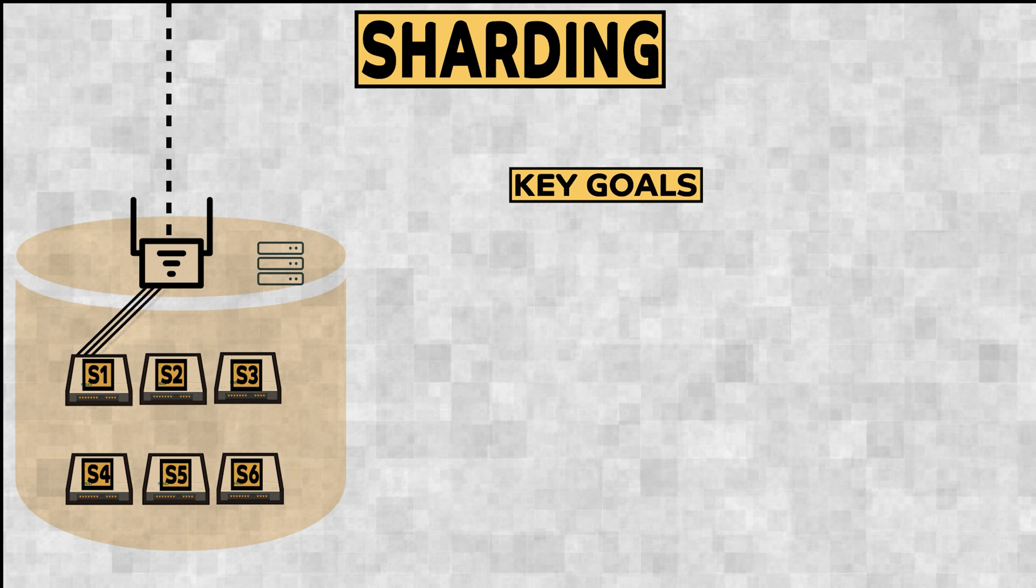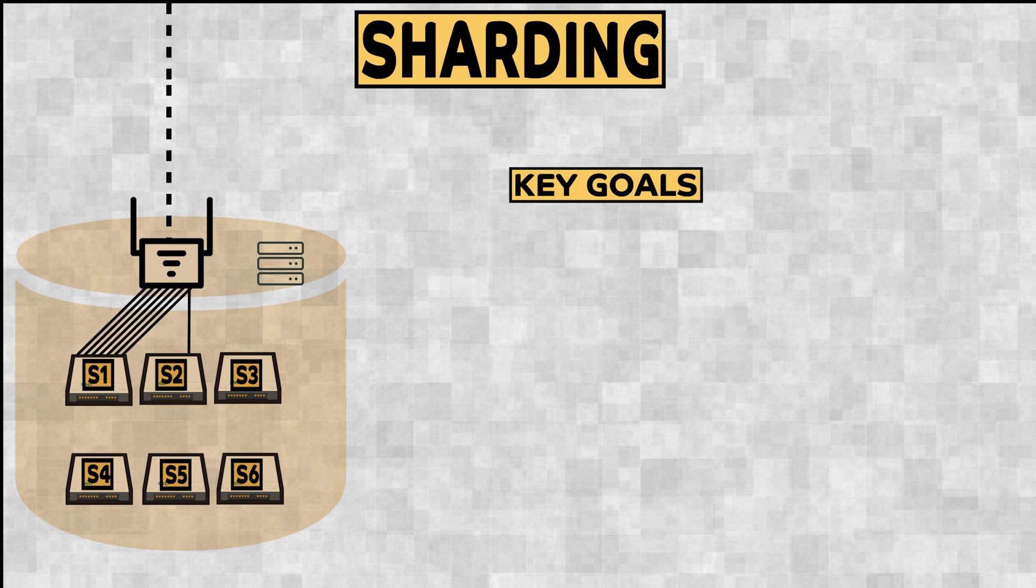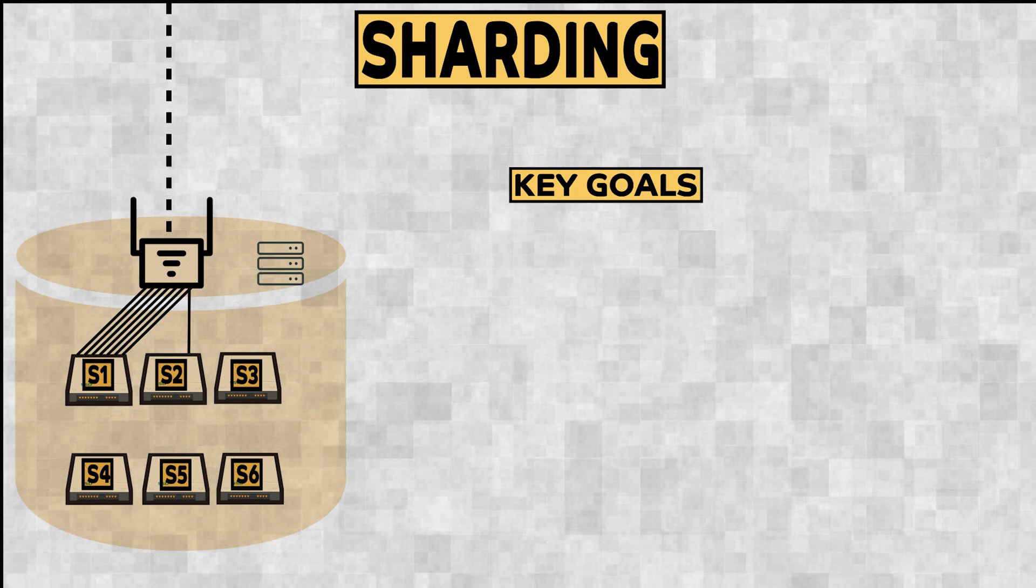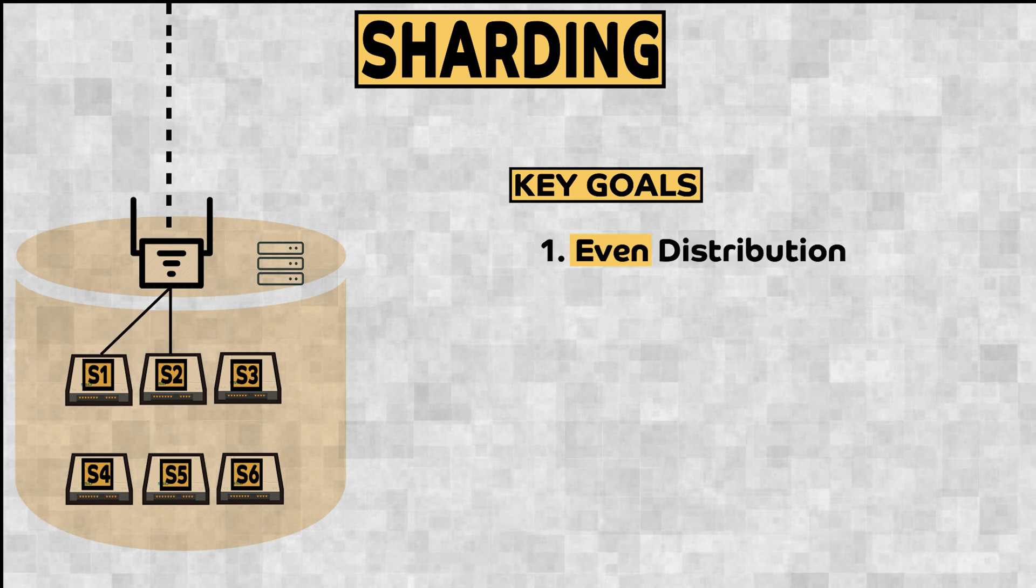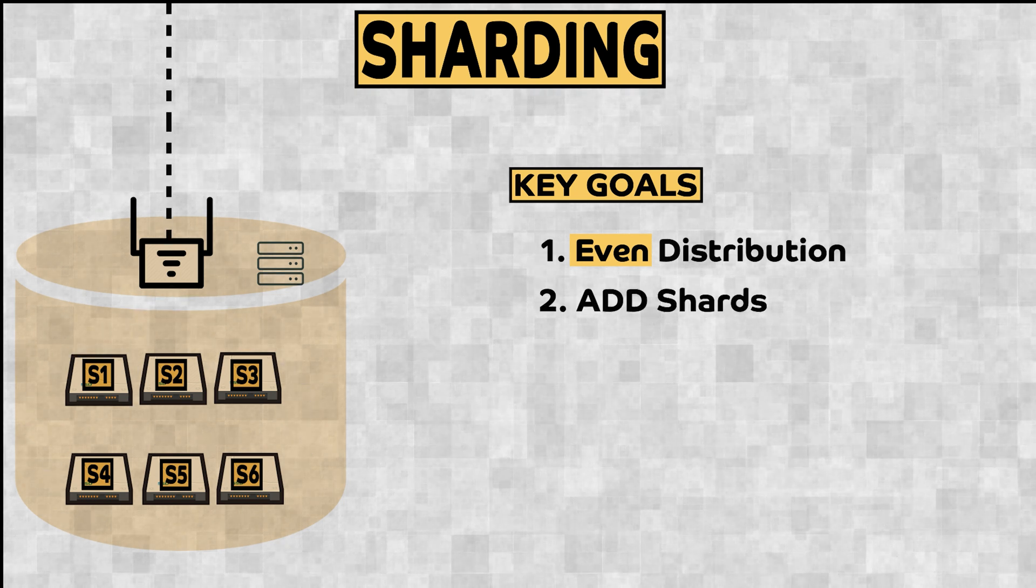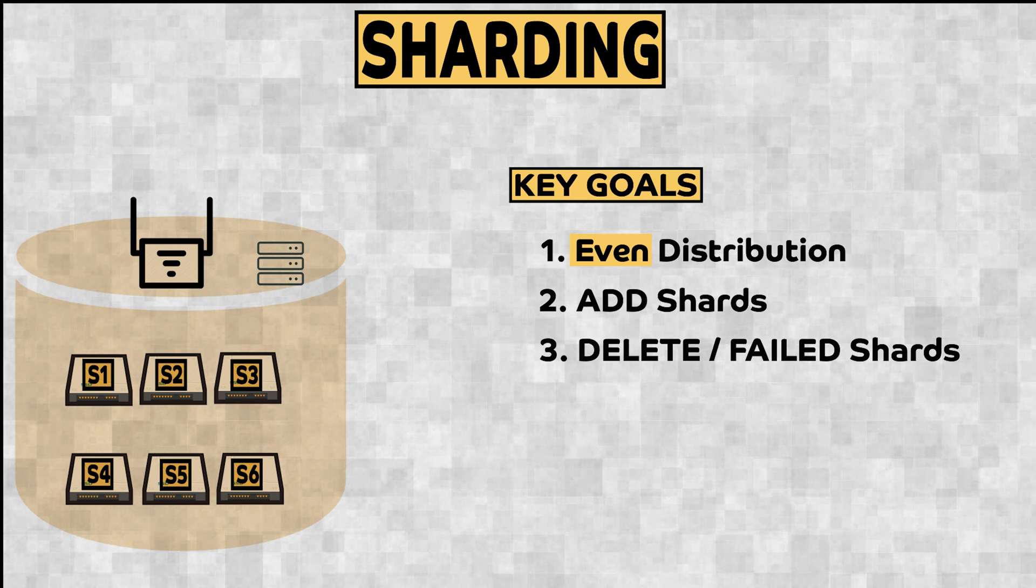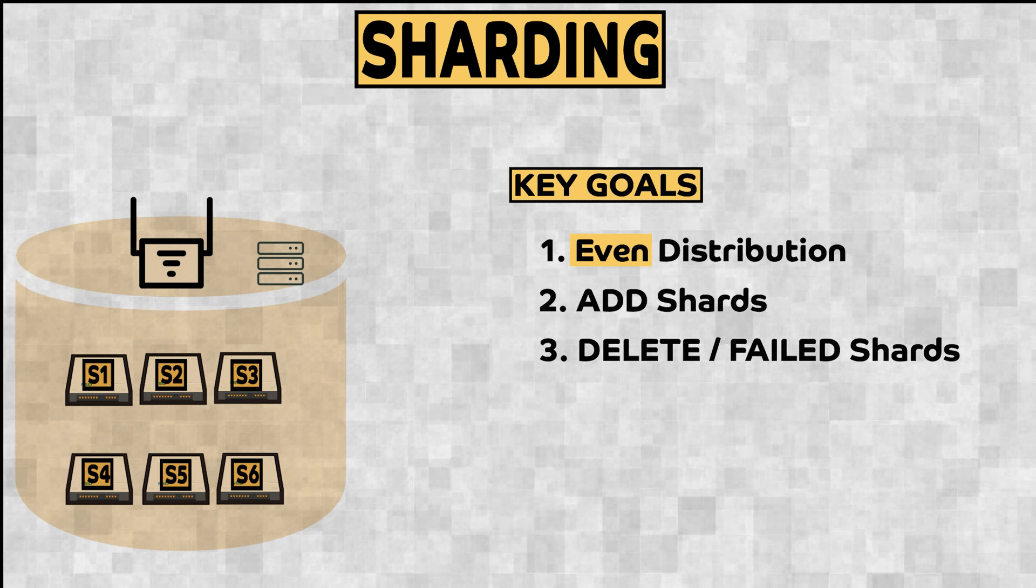You don't want millions of requests to go to shard 1 and just one request to shard 2. For sharding to be effective, you want incoming requests to be evenly distributed across shards. Also, while adding new shards and handling shard failures, you need to ensure that there is minimal impact to other shards and the system is still functional overall.